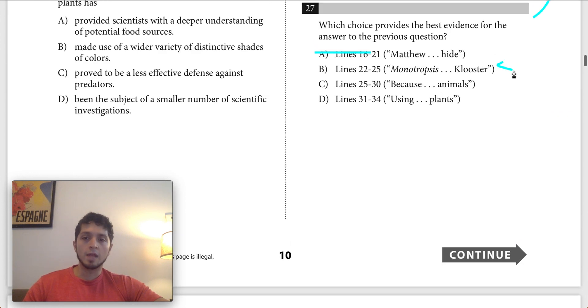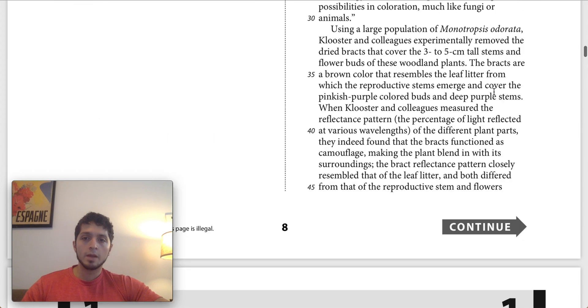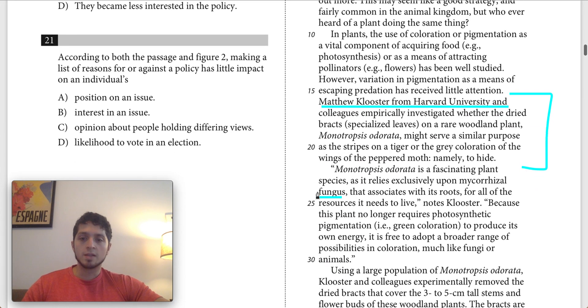Then we have lines 25 through 30. Because this plant no longer requires photosynthetic pigmentation, i.e. green coloration, to produce its own energy, it is free to adopt a broader range of possibilities in coloration, much like fungi or animals. This is an interesting answer choice because what's going on is that this is contrasting other plants with monotroposis odorata. Because this specific plant doesn't require photosynthesis, it doesn't need photosynthesis for its resources, all it needs is this fungus.